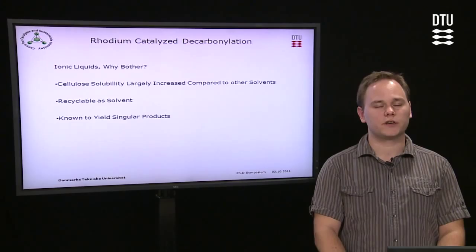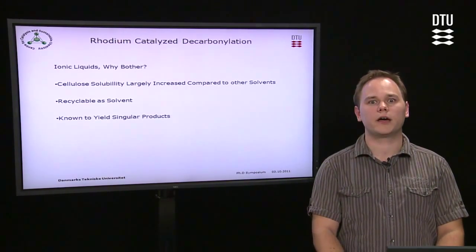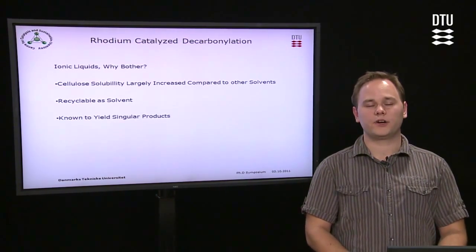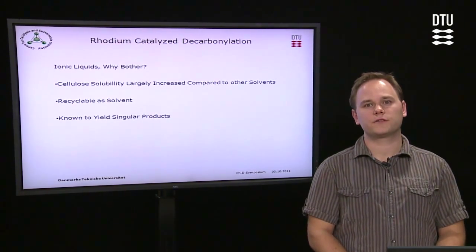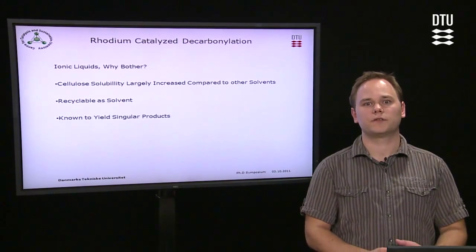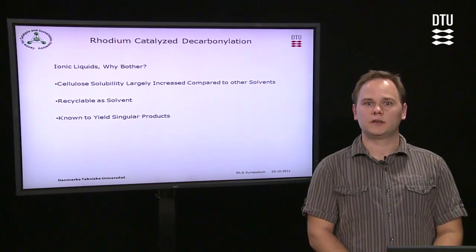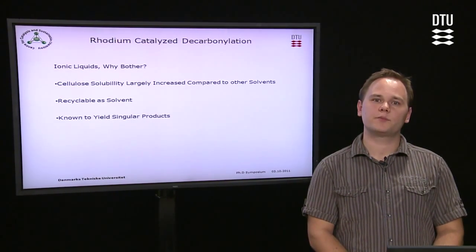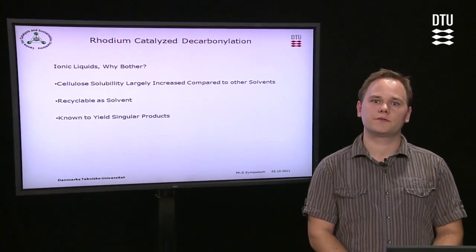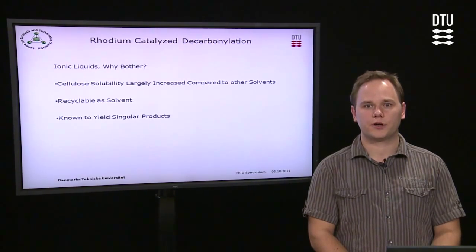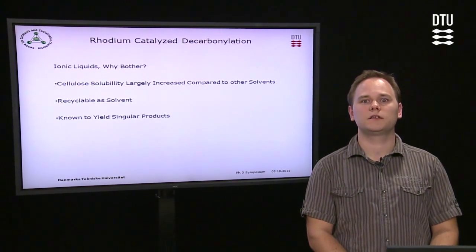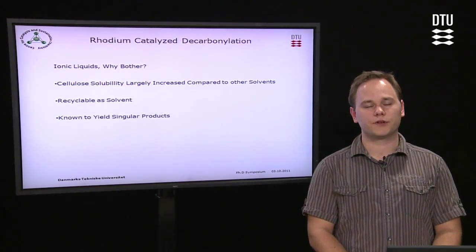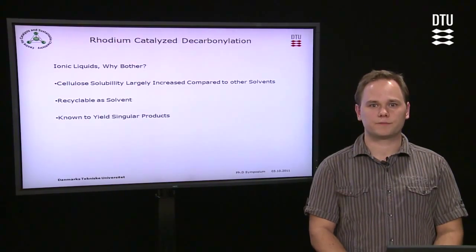This can be done in ionic liquids, where you have small and very low vapor pressures, which is a great advantage due to the fact that you now have the possibility of distilling off your product. Also, cellulose is highly soluble in different ionic liquids.